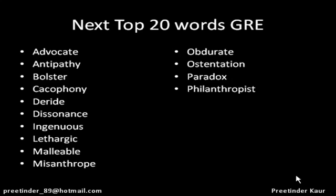The next word is philanthropist. 'Phile' is a root word for love and 'anthrop' — as discussed in the case of misanthrope — is the root word for humanity. So a philanthropist is a person who loves humanity, does a lot of charitable work, and is very generous, beneficent, and benevolent.